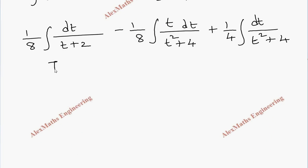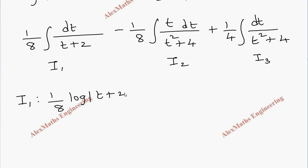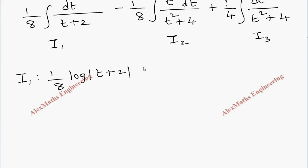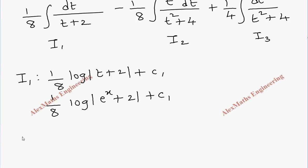Let us solve each part separately. For I1, the integral of dt over (t plus 2) is log |t plus 2|, so I1 equals (1/8) log |t plus 2|. Replacing t with e power x, I1 equals (1/8) log |e power x plus 2| plus C1.